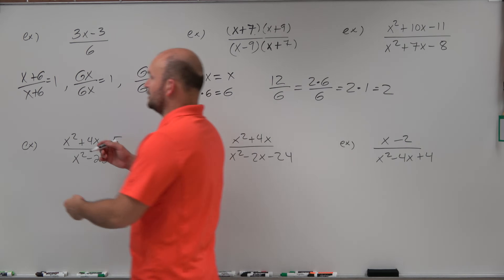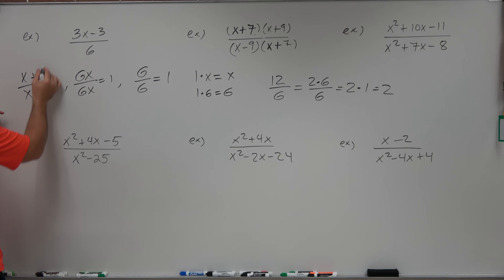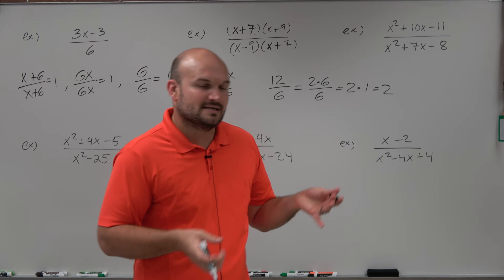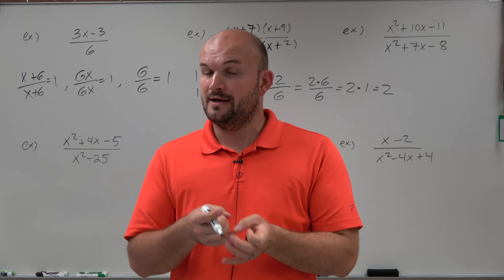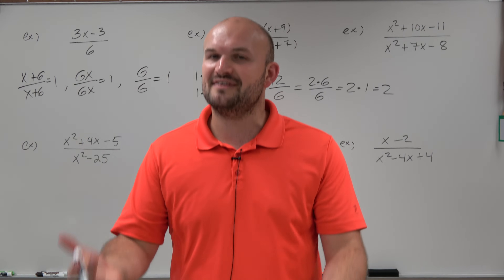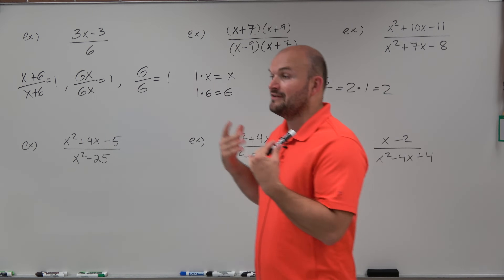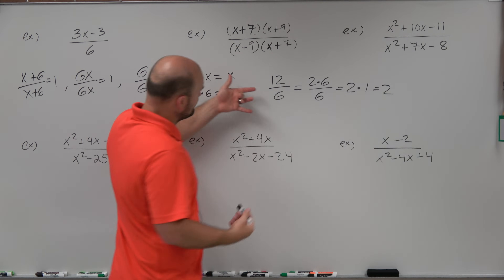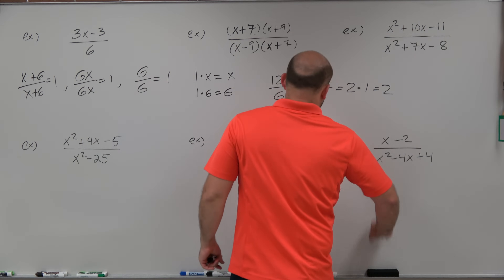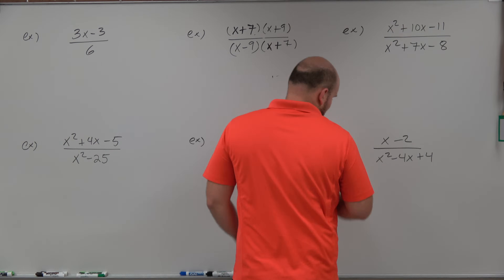That's very important because x plus 6 over x plus 6 equals 1, but you can't divide out just the 6's and say it's x over x. You have to have terms separated by multiplication. Taking an expression and rewriting it using multiplication is called factoring. So for each of these problems, we are going to apply factoring to ensure our terms are separated by multiplication before applying the division property.